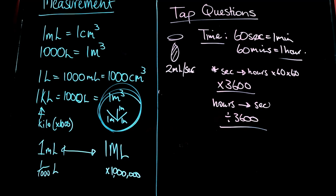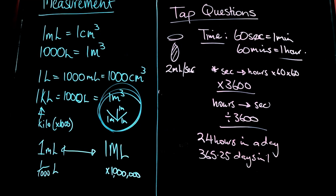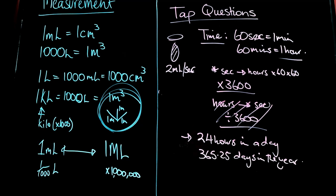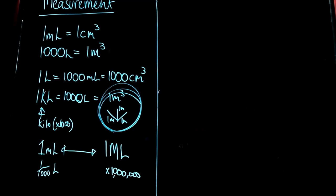Also remember there are 24 hours in a day and 365.25 days in a year. Your dripping tap question steps you through converting from seconds to minutes to hours. Part of the question asks how much water you've lost in one day, then how many liters for the whole year. Those are the types of questions to be careful with.